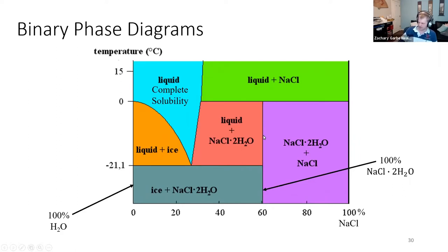You have phase boundaries like flat lines or vertical lines, and a certain composition would represent 100% hydrated sodium chloride. The hydrated sodium chloride is a different crystal structure than sodium chloride that is not hydrated. So here's another binary phase — you have a mixture of two phases.